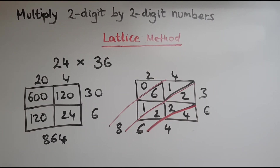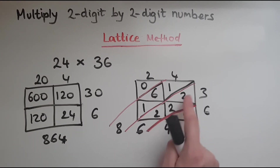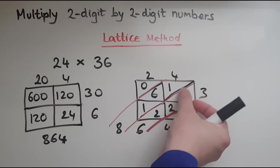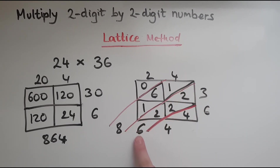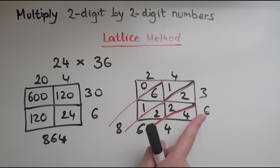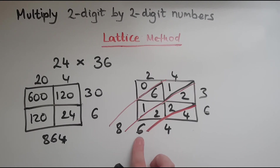Why does this work? We always start with the units: 6 times 4 gives 24 — so 4 and the 2 is carried over, just like in the other methods. Then we have tens multiplied by units, and units multiplied by tens, added together. When you say 6 here it means 60, because there's a 4 holding the units place. Similarly, tens multiplied by tens makes hundreds, because this represents 800 with units and tens holding the place.